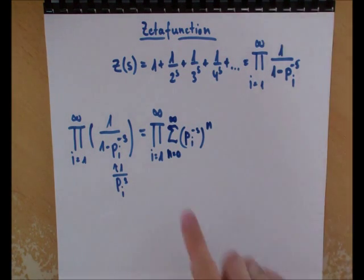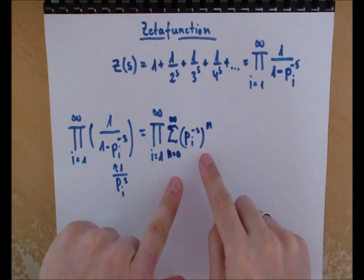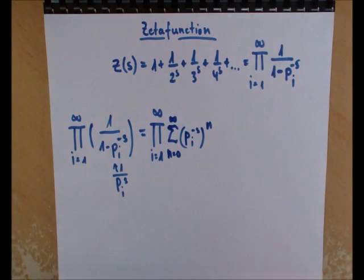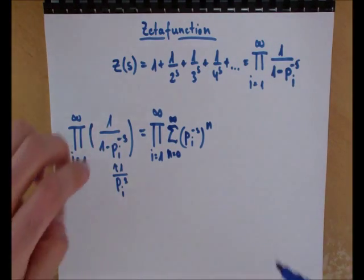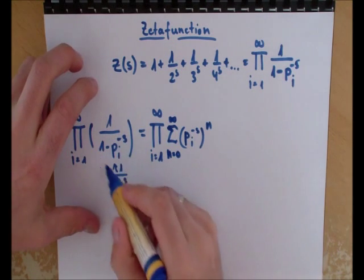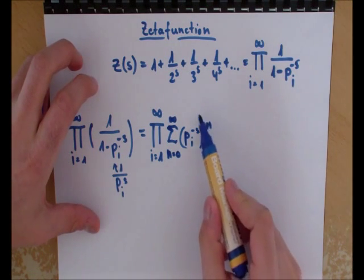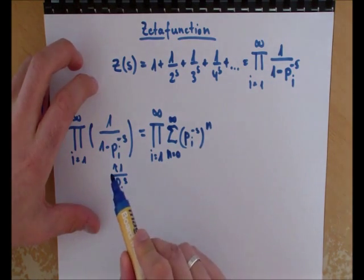This is what Euler did. This is the first step, and we just turned this into a geometric series. I hope you know the geometric series. If you don't know, look at my other videos.